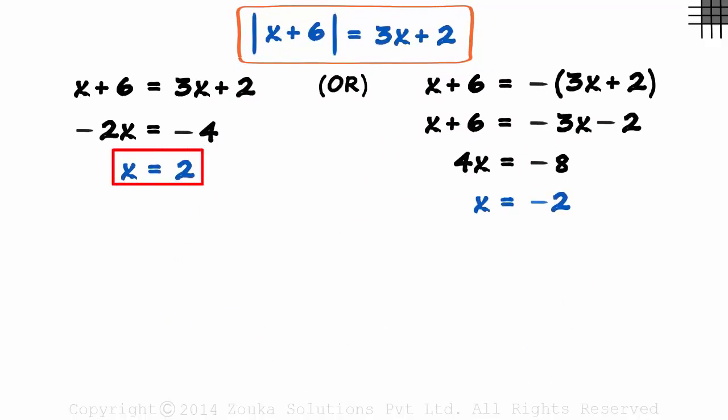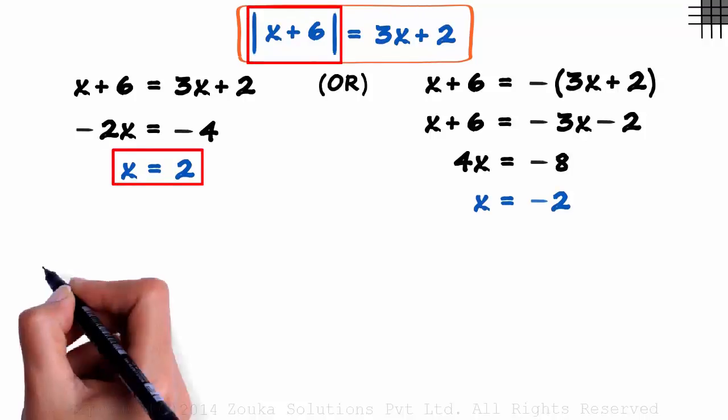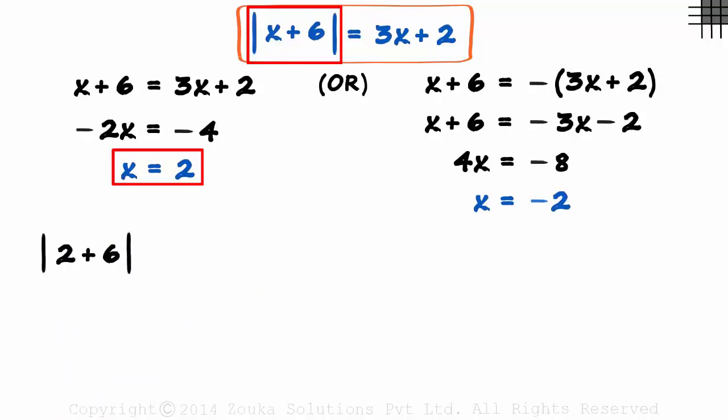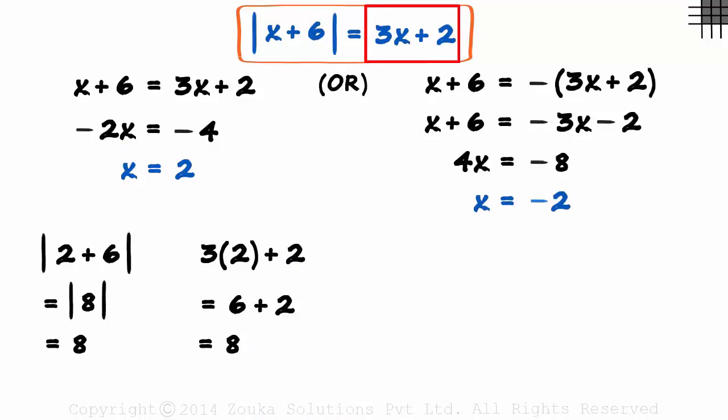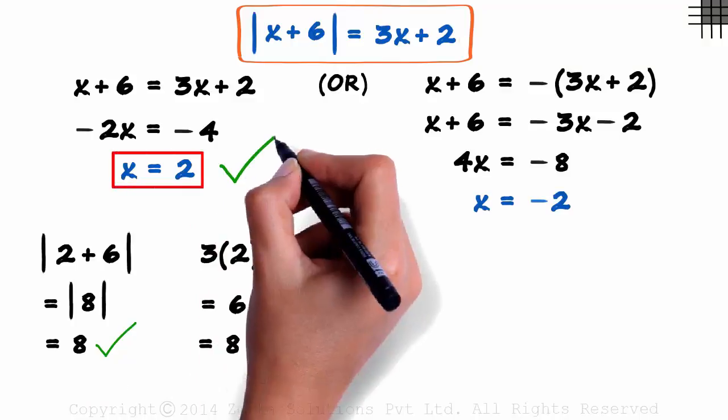Take the x equal to 2 case first. The left hand side will equal the absolute value of 2 plus 6. That equals 8. And the right hand side will be 3 times 2 plus 2 which also equals 8. Both these values are equal which is why x is equal to 2 is a correct solution.